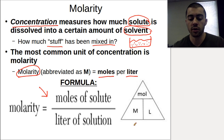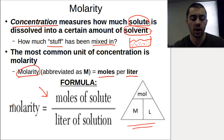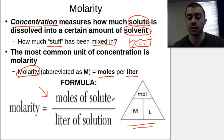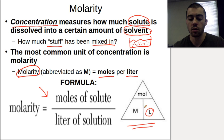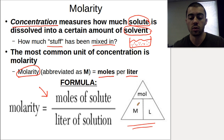This is another formula where we can use the triangle, because we have a single number equals a fraction. If we're trying to solve for moles, we cover up moles and do molarity times liters. If we're trying to solve for liters, we cover up liters and do moles over molarity. This triangle works for those who don't like doing the algebra, but if you're fine solving the equation, just do it that way.